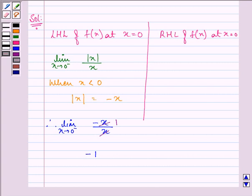Now, for the limit as x approaches 0 from the right-hand side, the function is |x|/x.